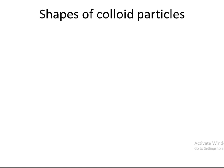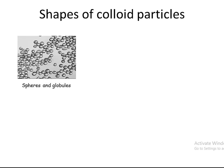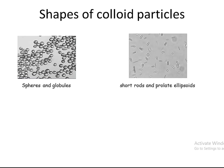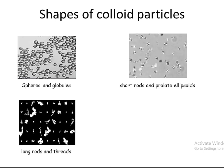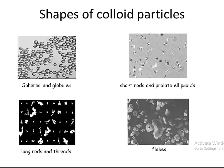Colloid particles can be available in a wide range of shapes — for example, spheres and globules, short rods and colloidal ellipsoids, long rods and threads, and flakes.